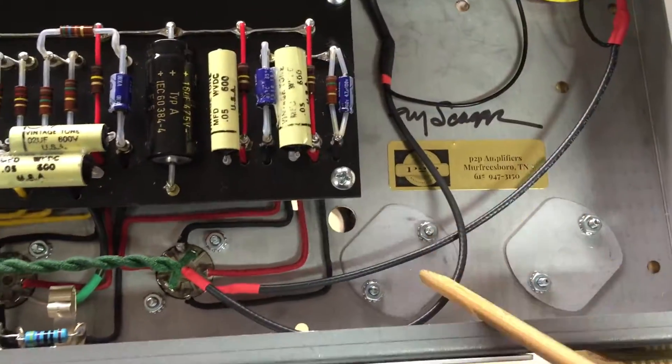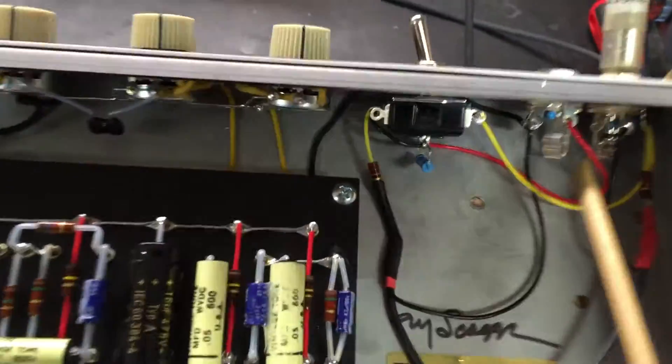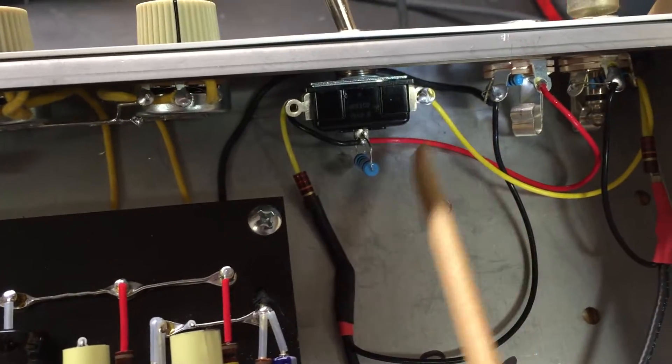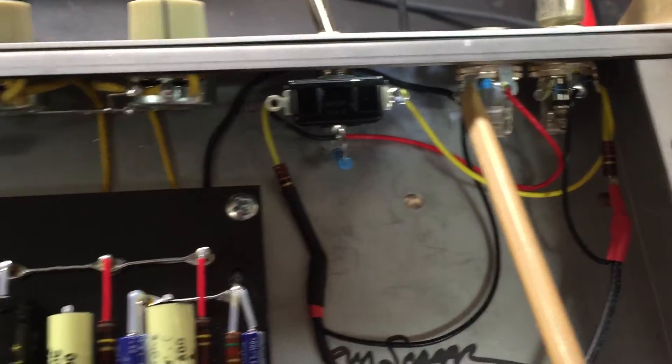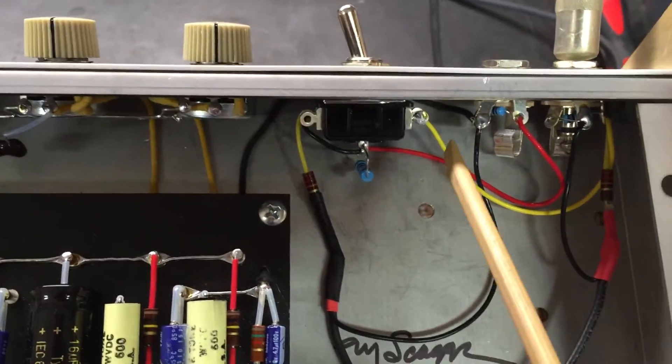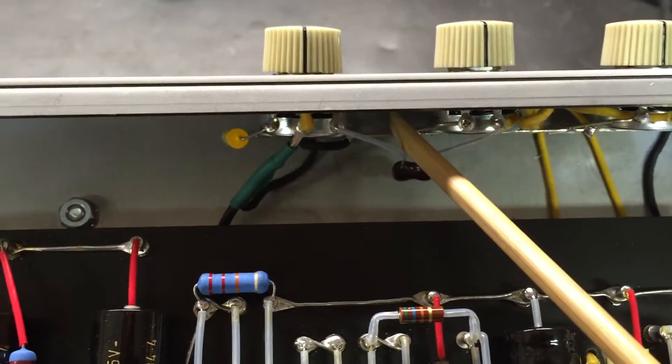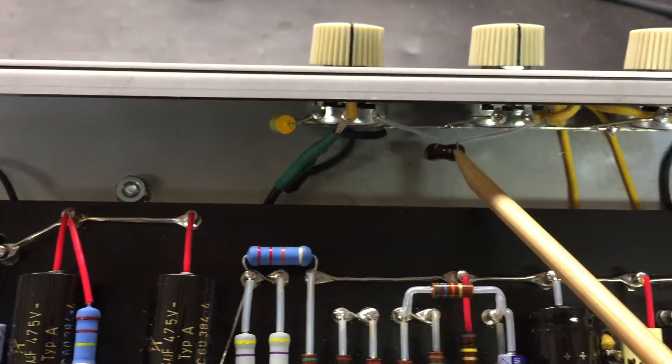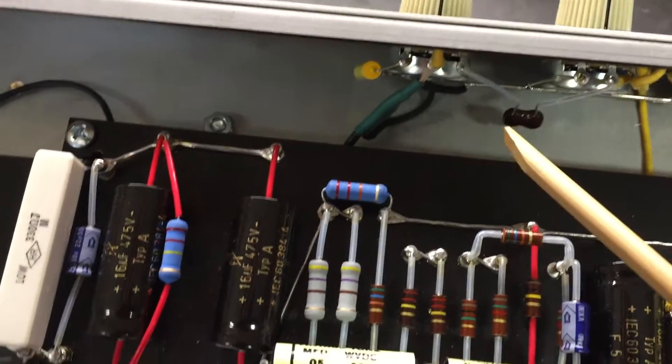All shielded cable right here for your inputs. There they are. I use some of the more modern resistors in areas like this because I know that those are places that you might get noise. There's your bright cap, treble cap right there. Just kind of leave that guy in place.